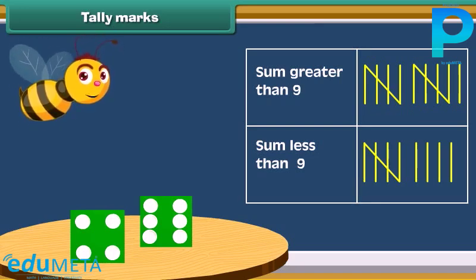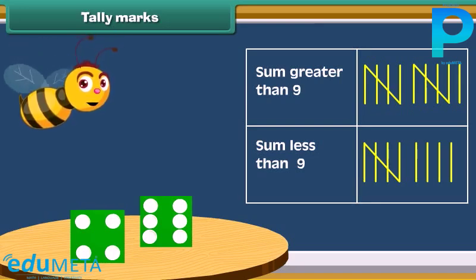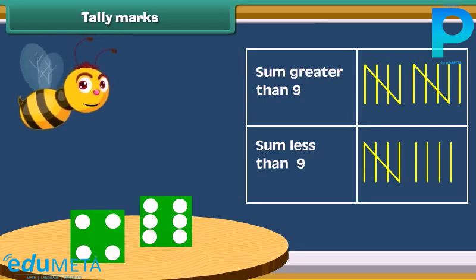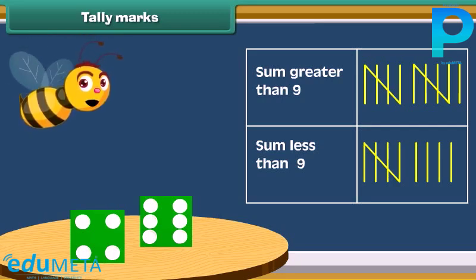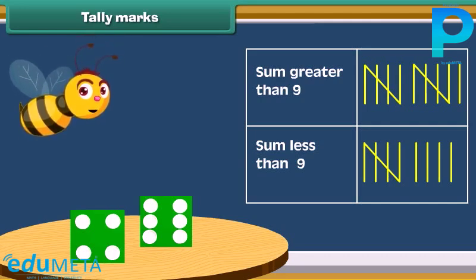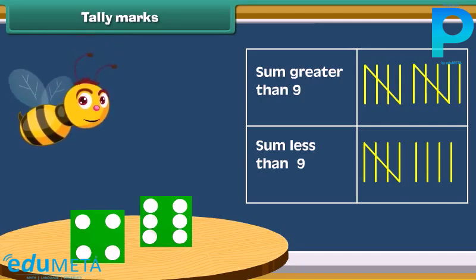Instead of counting each mark one by one, skip the count by fives and add remaining marks to the count. This makes counting quick.